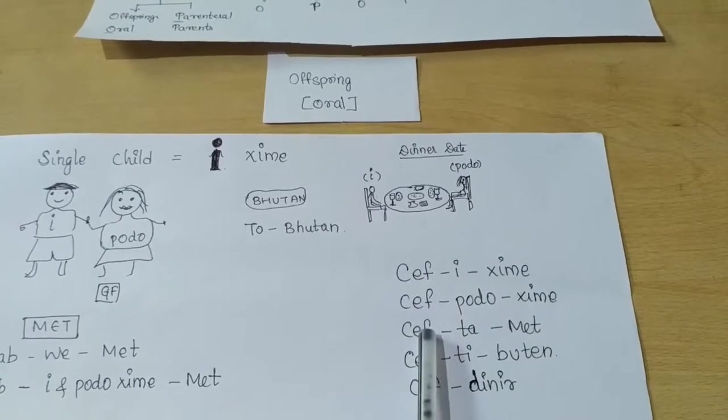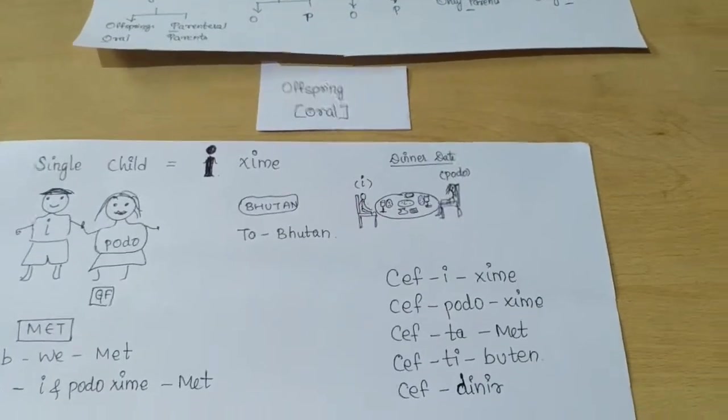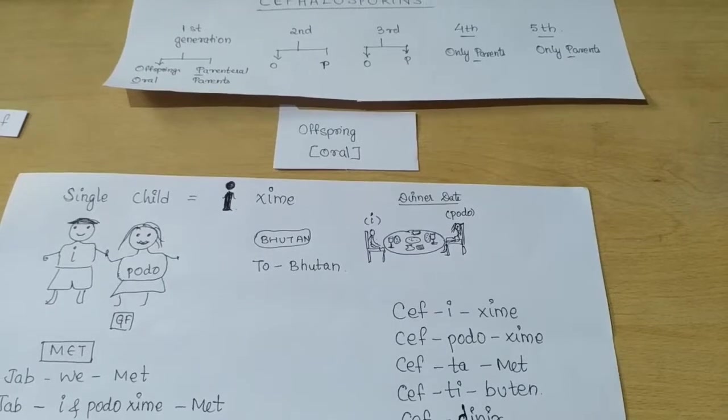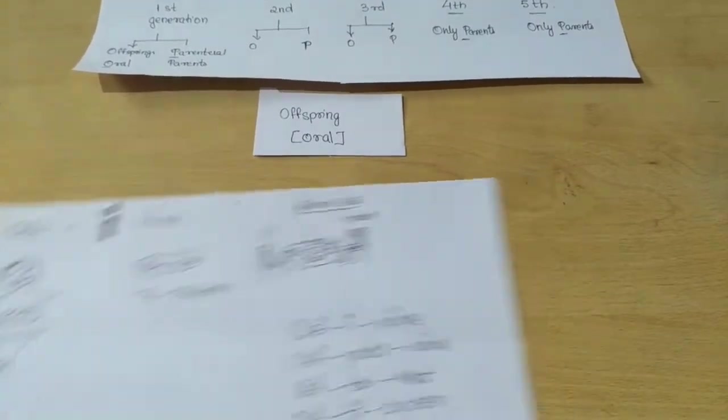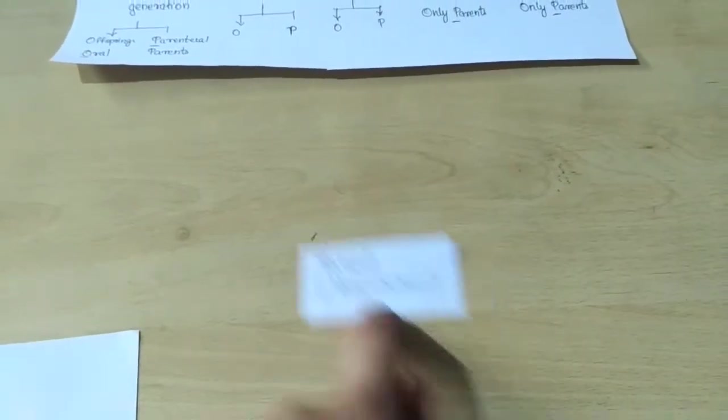So these are the five drugs which come under the oral part of the third generation. Now the parenteral drugs.